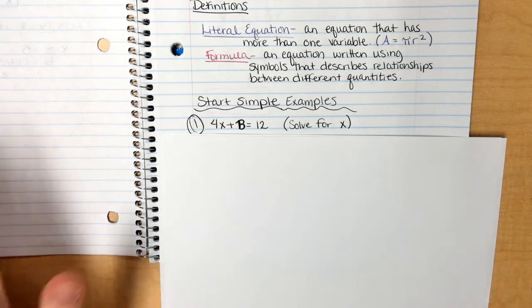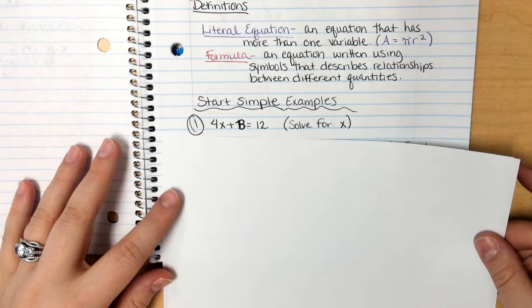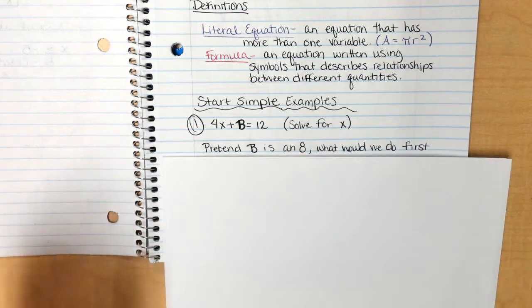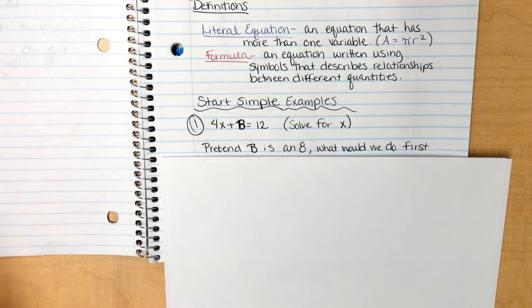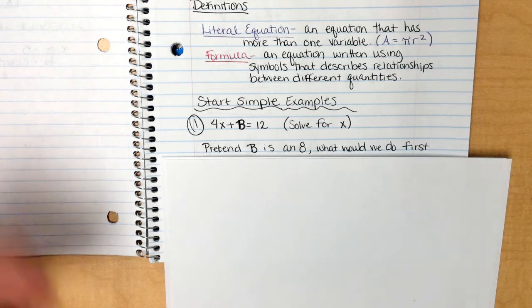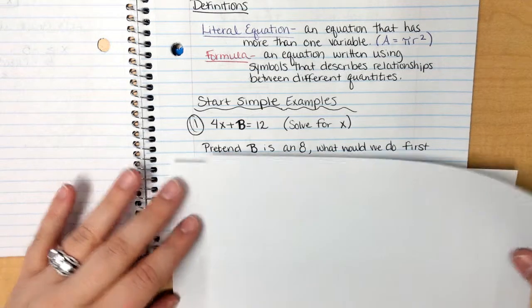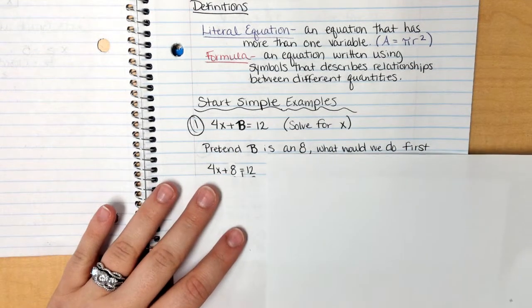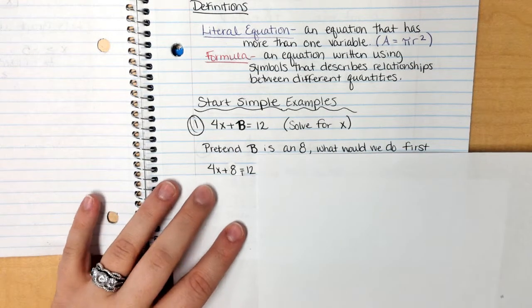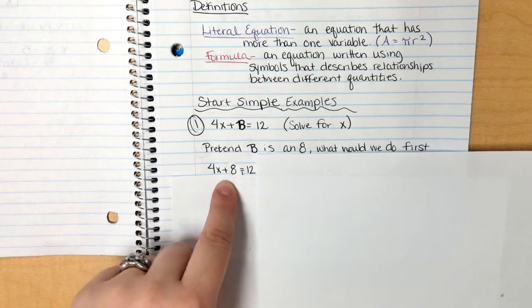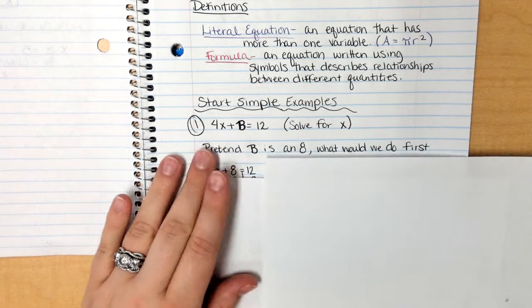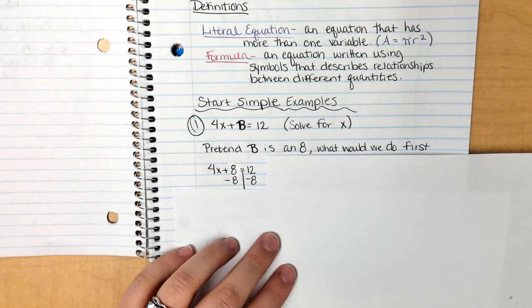What we need to think of in our head: pretend that b is something else. It doesn't have to be 8. I just picked 8 because he looks kind of like an 8. But pretend that he's any other number, 12, 7, 500, whatever you want him to be. But he's a number. What would we do first if he was a number? If it said 4x plus 8 equals 12, I would know that I have to subtract 8 on both sides.